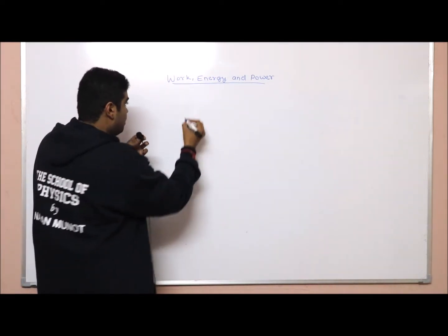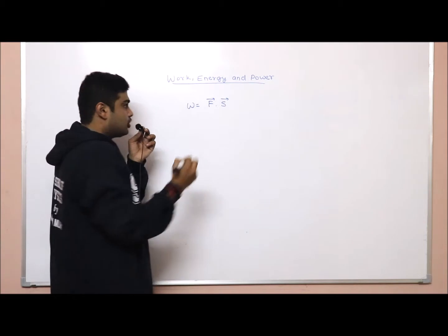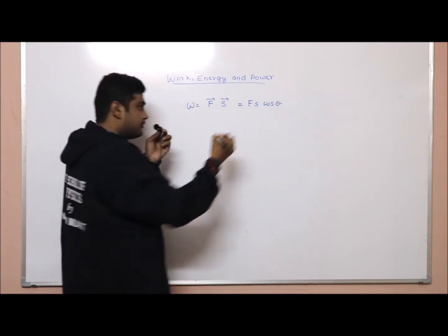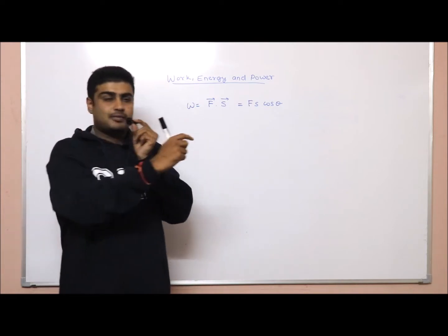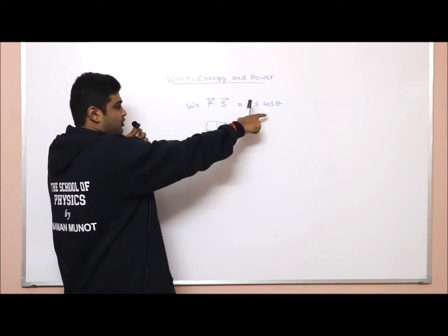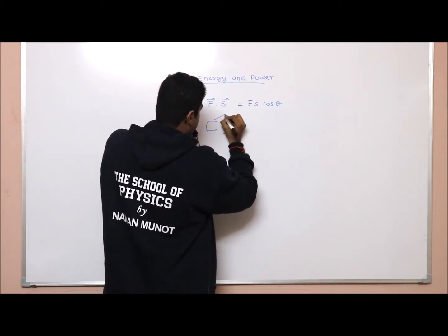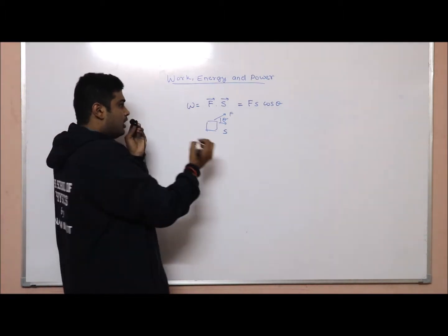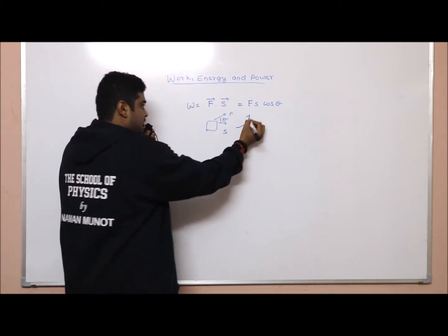So what is work? Work is force into displacement, and this is a dot product which gives F·s·cosθ, as we have studied in vectors. When the force and displacement are in the same direction, the angle between them is zero, so F·s·cosθ becomes F·s. But when there is an angle θ between the force and displacement directions, then work equals F·s·cosθ.